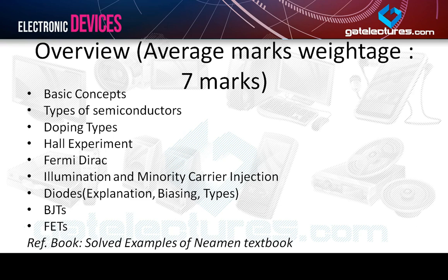In this subject, I will first cover the basic concepts related to semiconductors, then move on to types of semiconductor doping — uniform doping and non-uniform doping — the Hall experiment, Fermi-Dirac function and its applications, illumination and minority carrier injection, diodes with biasing and types, BJTs (bipolar junction transistors), and FETs (field effect transistors) like PMOS, CMOS, and NMOS. I would suggest you go through the solved examples of the Neamen textbook, as that would be very helpful for preparation after going through the lectures.